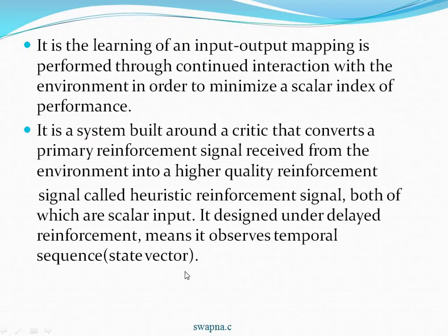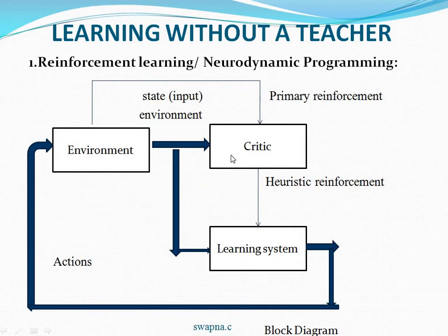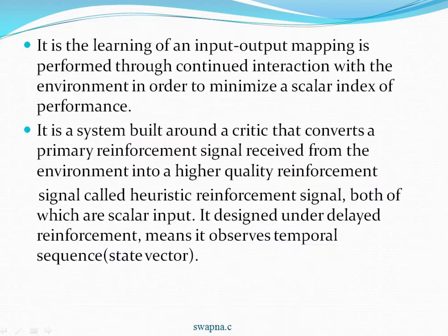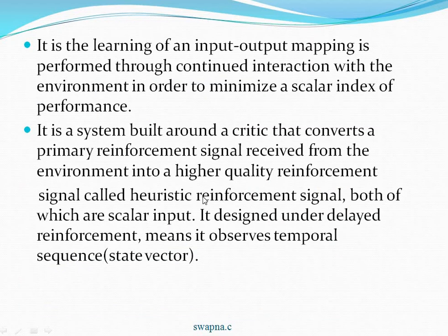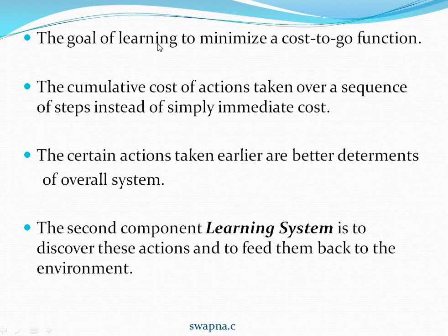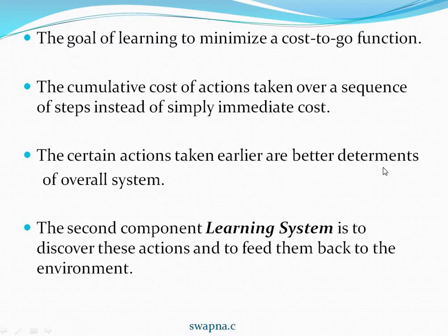The Critic is designed under Delayed Reinforcement and observes the Temporal Sequence from the State Vector. From Primary Reinforcements, it converts them into Heuristic Reinforcements, also performed under Delayed Reinforcement. The main goal is to minimize the cost-to-go function — the cumulative cost of actions taken over a sequence of steps, rather than simply the immediate cost. Actions taken in earlier steps may give better determinants of the overall system performance.